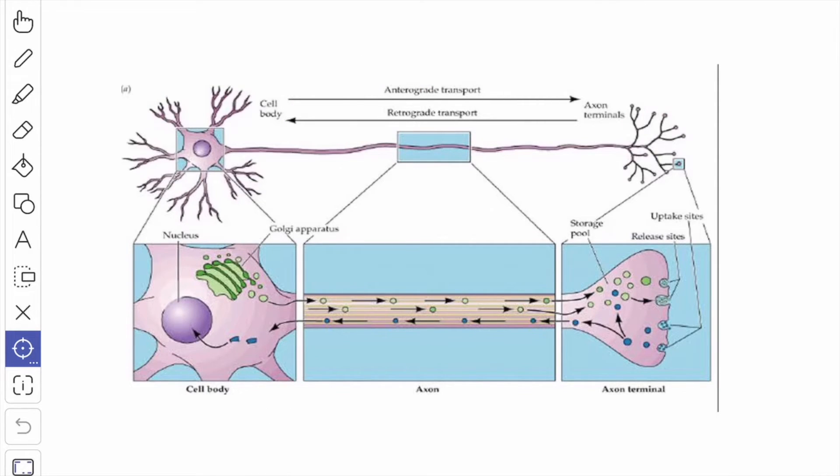We will see about the axoplasmic transport. The axoplasmic transport may be orthograde or anterograde from the cell body to the nerve endings, whereas retrograde transmits from the terminal nerve endings to the cell body. The orthograde transport may be slow and fast.